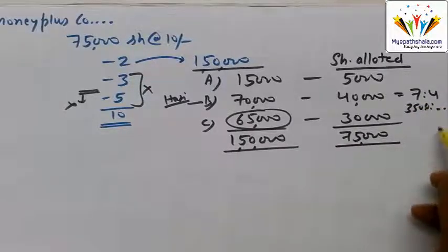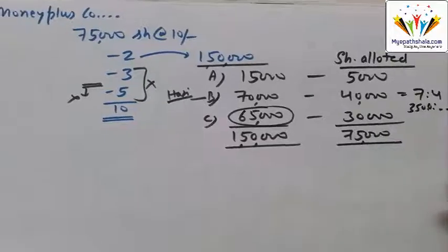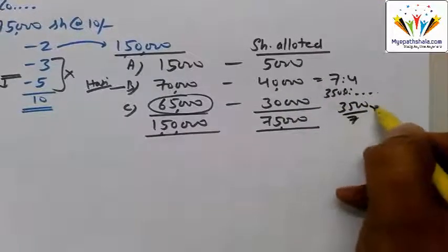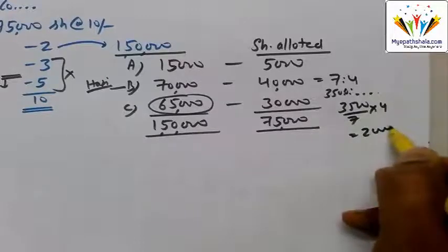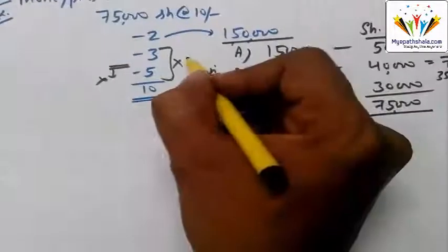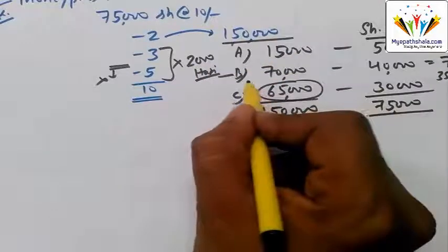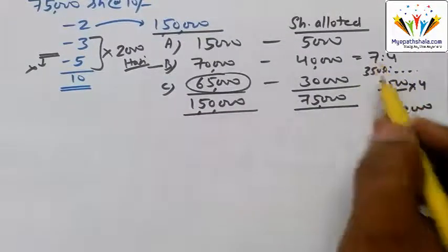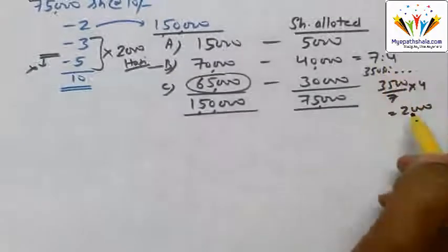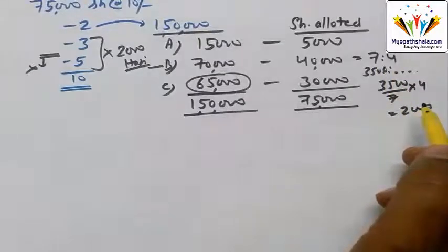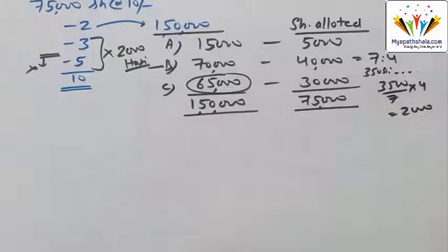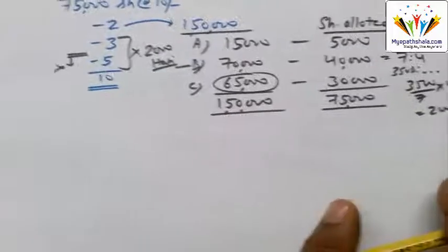So we can calculate the shares allotted: 35,000 applied at a ratio of 7:4, meaning 35,000 × 4/7 = 20,000 shares allotted under Group B. Rohan is a shareholder who was allotted 3,000 shares and paid the call money along with allotment — this is a different condition. I will explain the table as well.